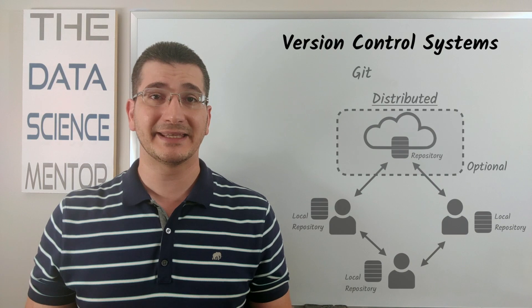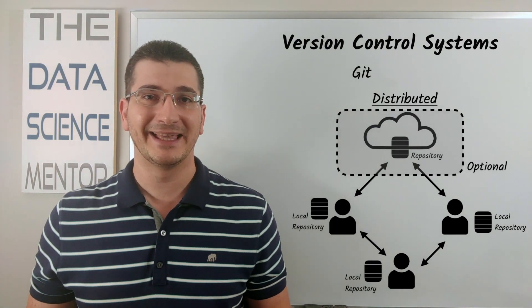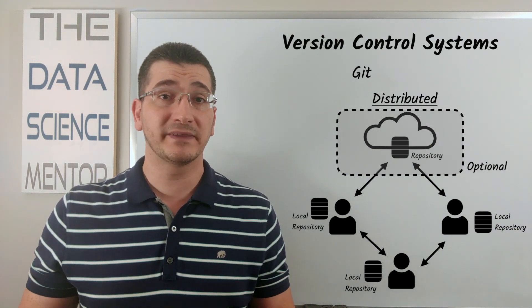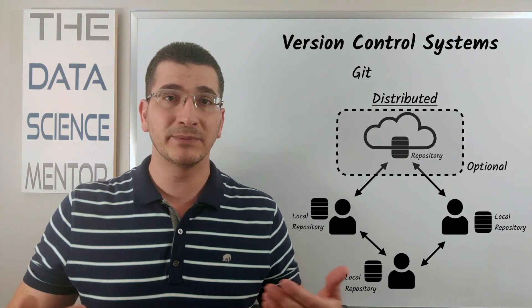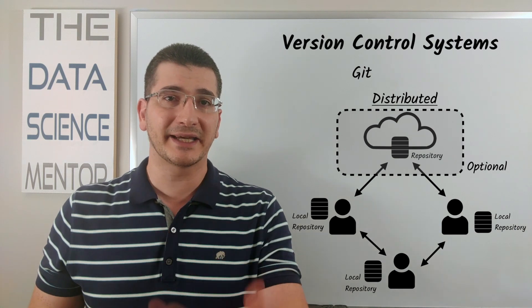Now Git, on the other hand, is a decentralized or distributed version control system. Unless you decide to place your repository on some remote server, with Git you can actually perform everything locally so you're able to work and save your changes offline without the need to be connected to the internet.